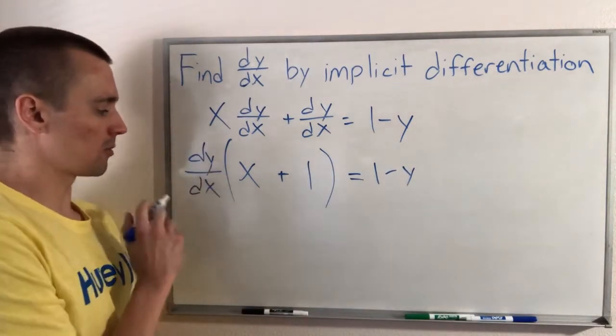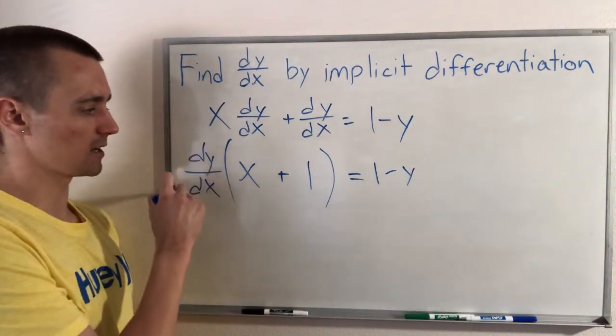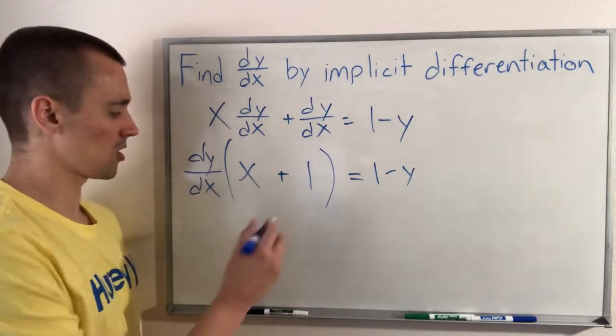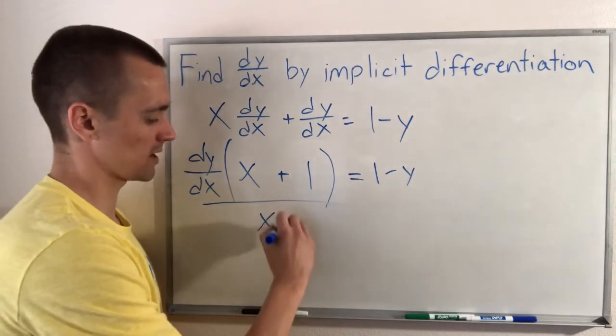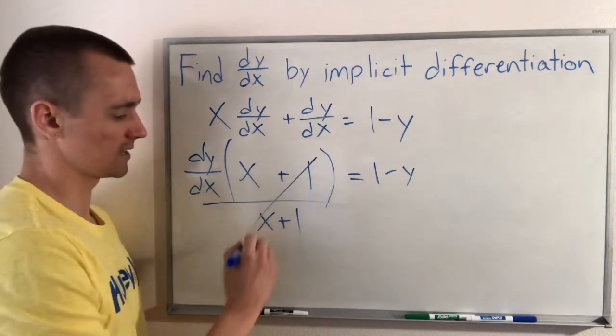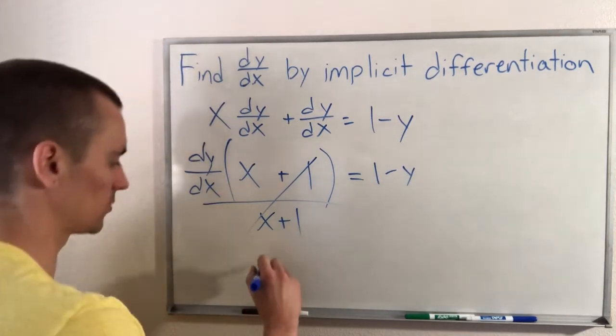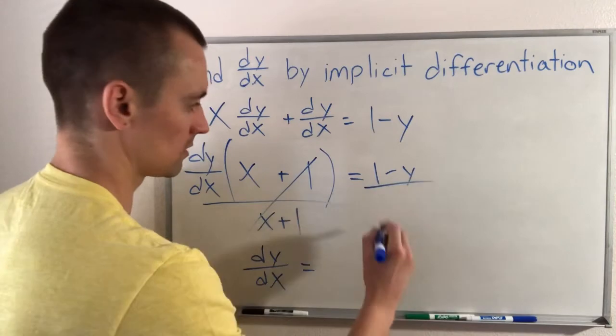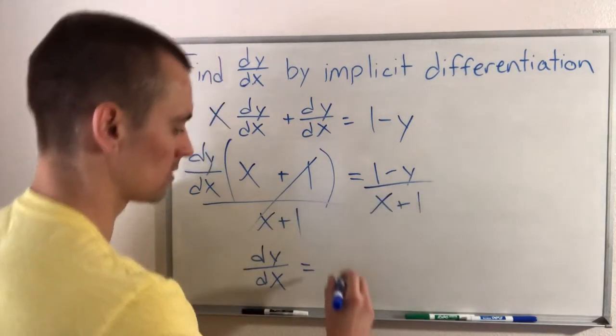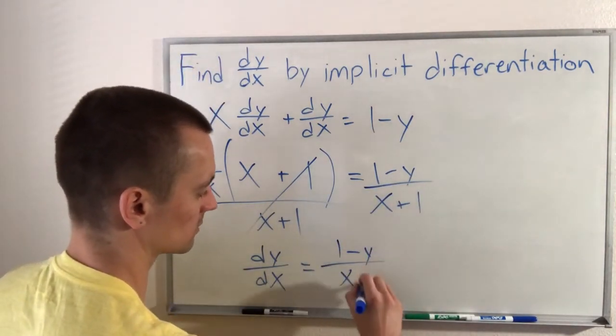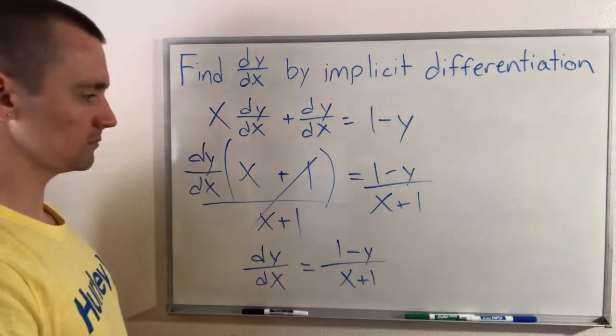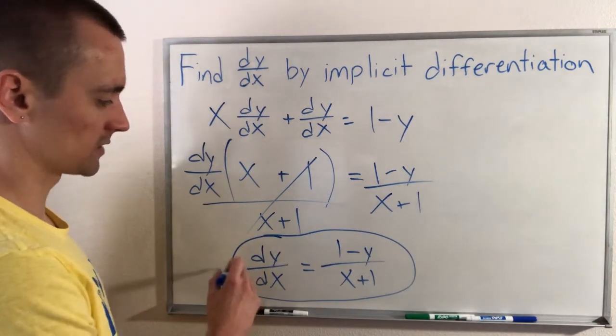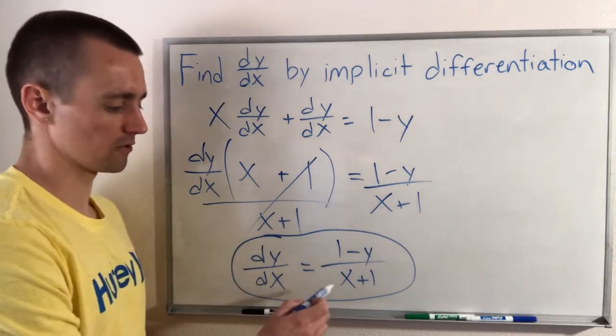Now we want to get our dy/dx all by itself. So we have dy/dx times a bunch of other stuff. If we want to move all this other stuff over to the other side, all we have to do is divide both sides by all this other stuff. So doing that, we'll cancel those, and we'll just be left with dy/dx equals 1 minus y over x plus 1. We just divided both sides by x plus 1.